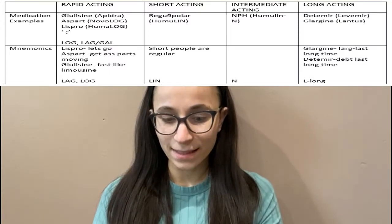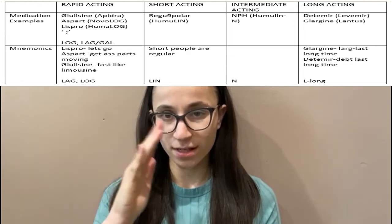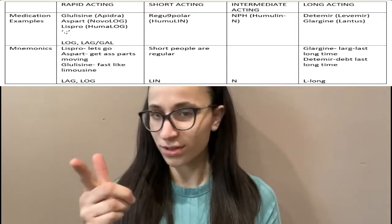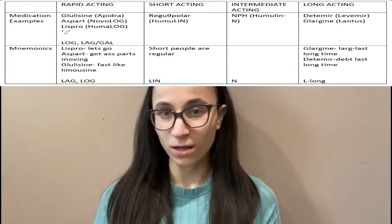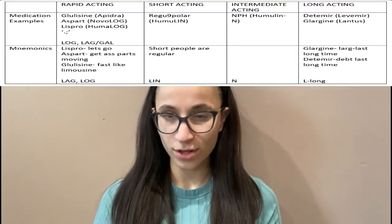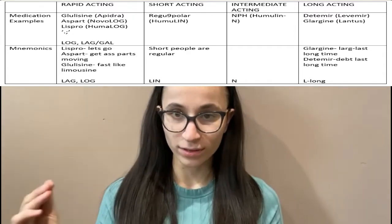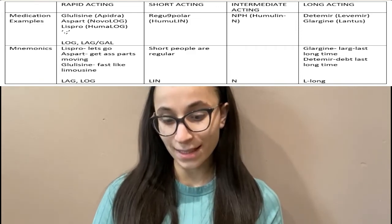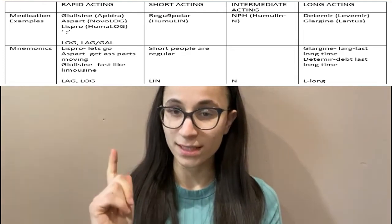Now for the medication mnemonics. Rapid acting insulins — glulisine, aspart, and lispro — the first letters spell GAL or LAG. Lispro is like 'let's go, it's rapid.' Aspart is like 'get your ass over here quickly.' Glulisine looks like a limousine — really fast. For short acting, 'short people are regular,' so regular insulin falls under short acting.